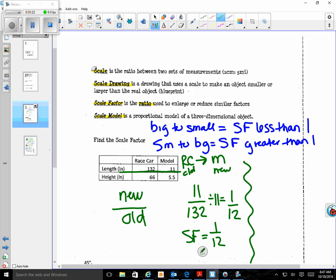If I change it and flip the order and go small to big, I'm going to flip the order. So this now becomes my new and this becomes my old. So I get 132 on top over 11. When I divide, 11 goes into 132 once, and then I have twice. So my scale factor from small to big is 12.